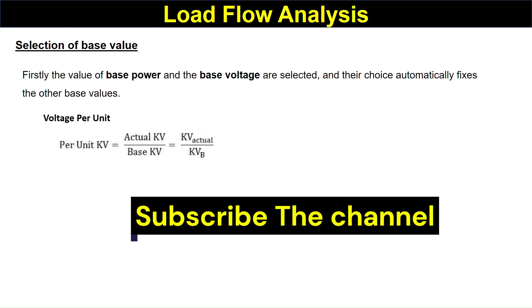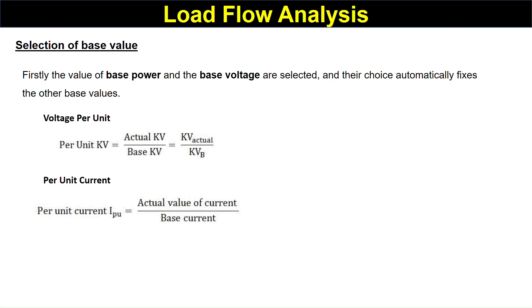Per unit voltage is the ratio of actual voltage divided by the base voltage. Per unit current is the actual value of current divided by the base current. Base current is equal to base power divided by base voltage.